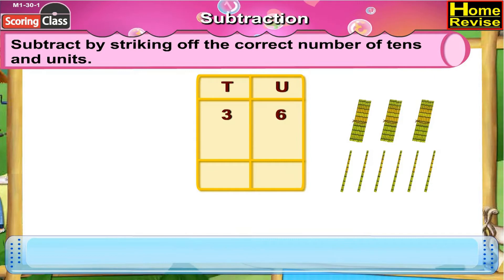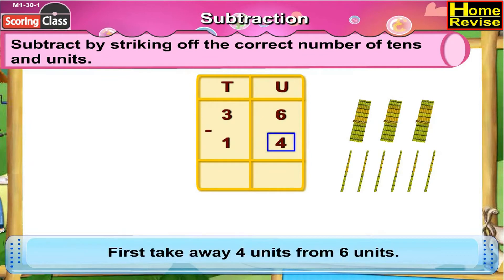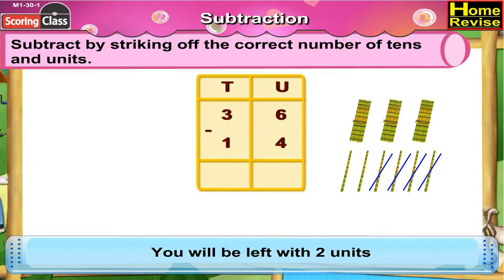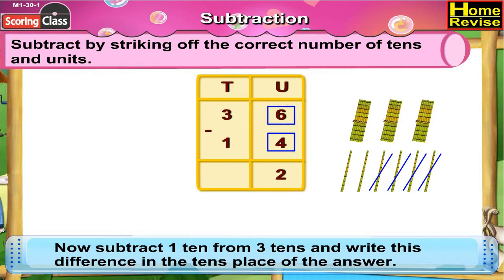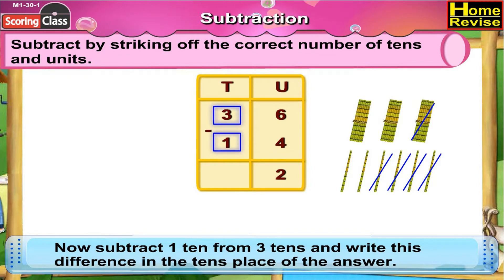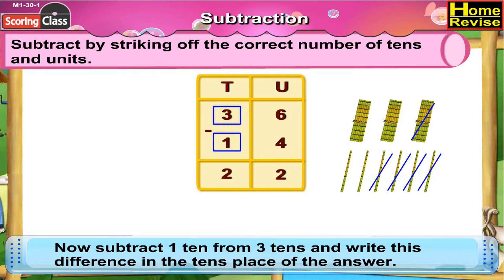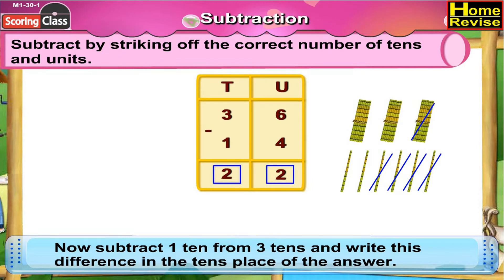Next is 36 minus 14. First, take away 4 units from 6 units. You will be left with 2 units. Write down the remainder in the units place of the answer — that is 2 units. Now subtract 1 ten from 3 tens and write this difference in the tens place of the answer. So 3 tens minus 1 ten is 2 tens. So 36 minus 14 is 22.